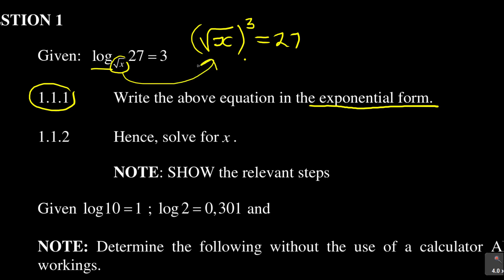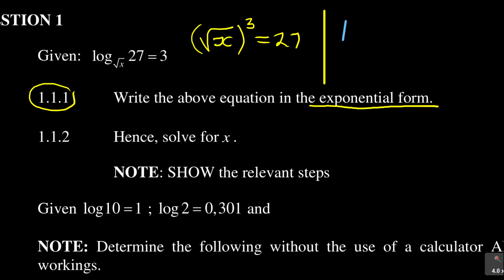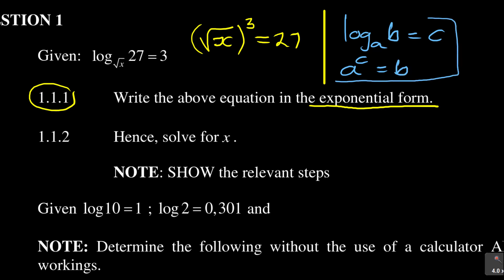The base becomes the base, that becomes the exponent, and this becomes the number. So the conversions are done like that. For example, if you are given log base A of B equals C, you convert it to exponential form as A to the power of C equals B. That is the rule you use when converting.